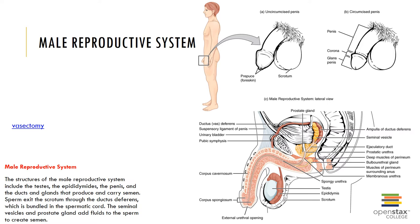Contraction of the smooth muscle propels sperm from the epididymis through the vas deferens towards the urethra. The ampulla is the terminal end of the vas deferens and is somewhat enlarged just before the sperm is deposited into the urethra. The vas deferens joins the duct from the seminal vesicle to form the ejaculatory duct, which penetrates through the prostate gland where it drains sperm and secretions from the seminal vesicles into the urethra. A vasectomy cuts, ties, and cauterizes the vas deferens for sterilization.